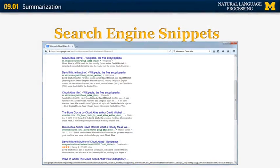Another type of summaries are search engine snippets. The difference between those and the ones we looked at previously is that those are query-based. Search engines return little passages from the retrieved documents that are most similar to the query. Here's an example — I did a search for Cloud Atlas, which is a science fiction book. The top hits returned by Google are all accompanied by short passages or snippets, and the words Cloud Atlas and the name of the author are highlighted.